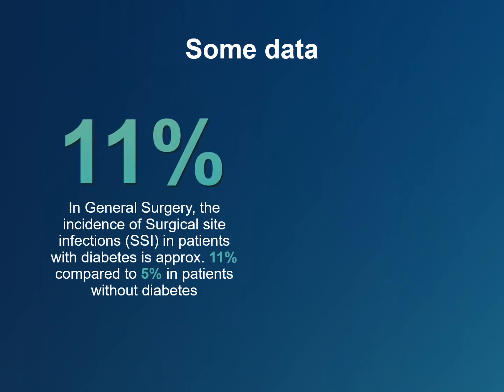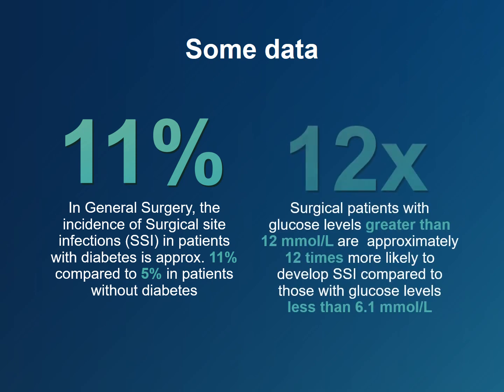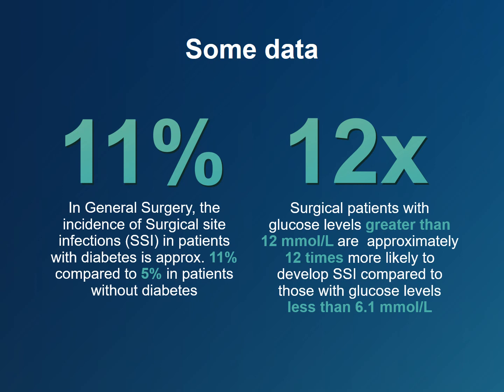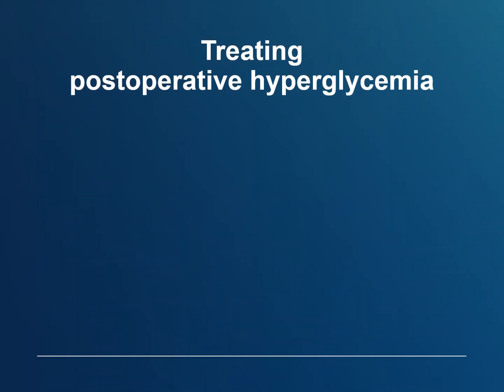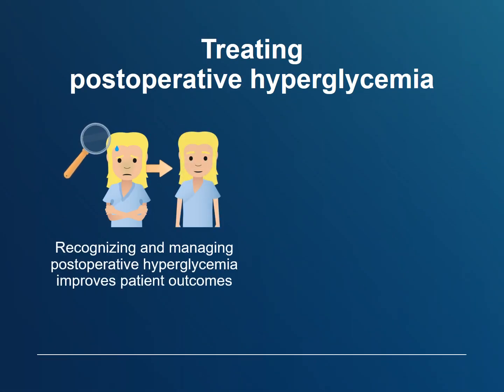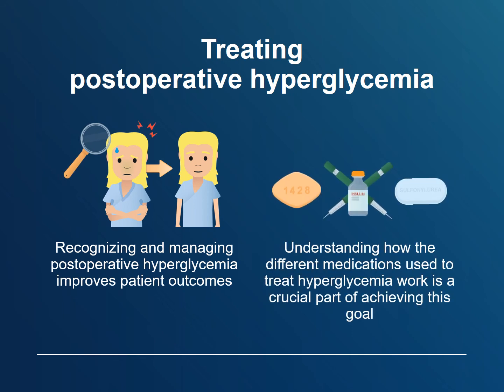In general surgery, the incidence of surgical site infections in patients with diabetes is approximately 11% compared to 5% in patients without diabetes. Surgical patients with glucose levels greater than 12 mmol/L are approximately 12 times more likely to develop a surgical site infection compared to those with glucose levels less than 6.1 mmol/L. Recognizing and managing post-operative hyperglycemia improves patient outcomes, so it is important to understand how the different medications work.